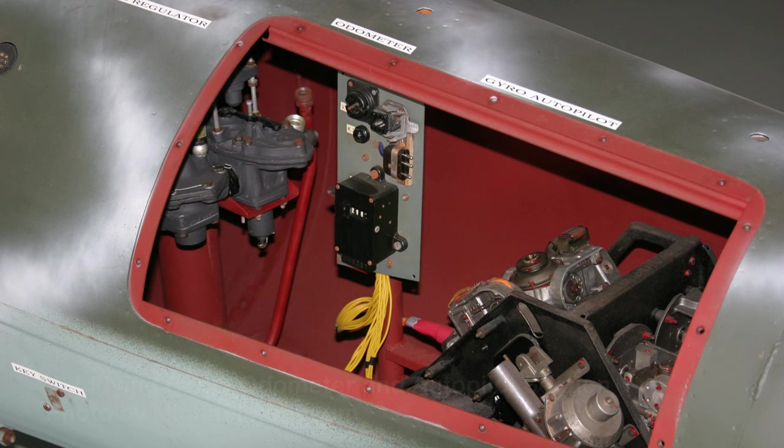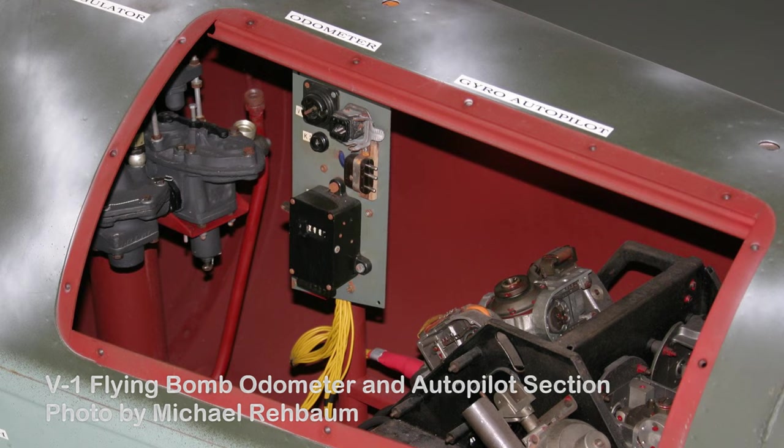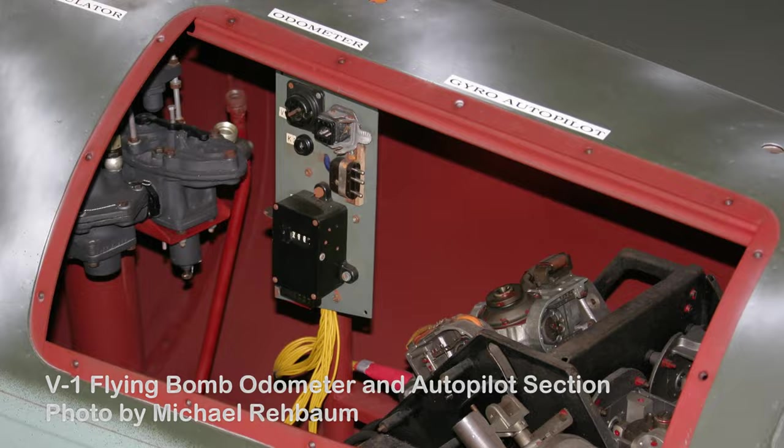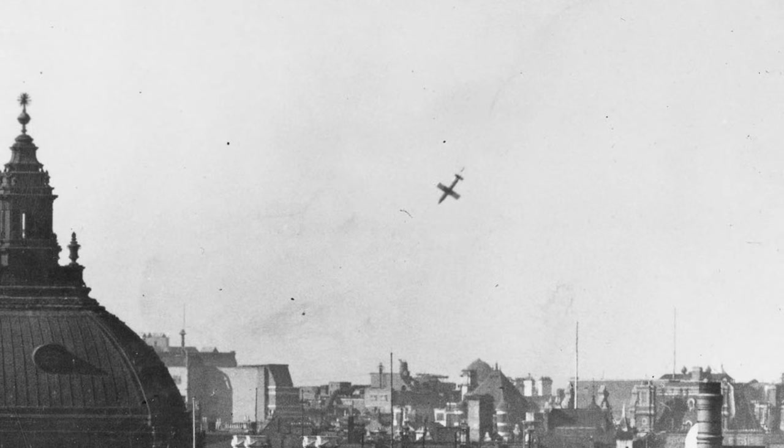An odometer preset before flight and driven by a vane anemometer, a small propeller at the nose tip, counted down the distance to the target. Every 30 rotations of anemometer propeller counted down one on the odometer. When the countdown reached zero, the V-1 turned into a steep dive. This starved the engine of fuel, causing it to shut off. To Londoners, this was heard as its characteristic buzzing sound upon approach, followed by what must have been a terrifying period of silence before explosion.